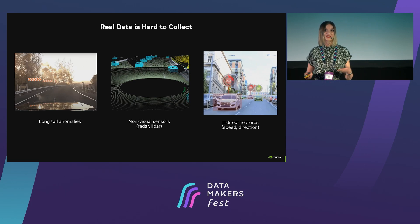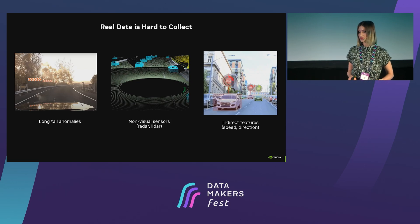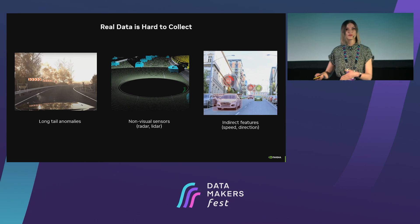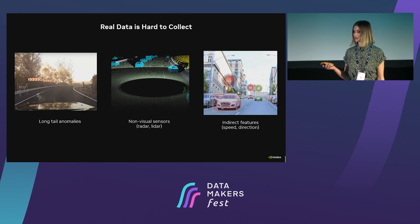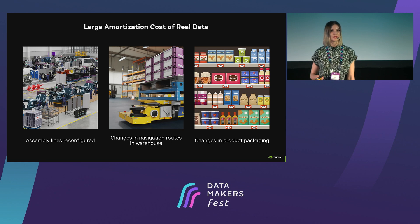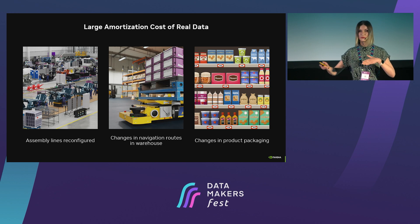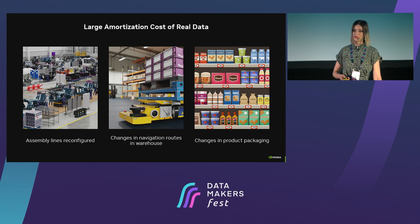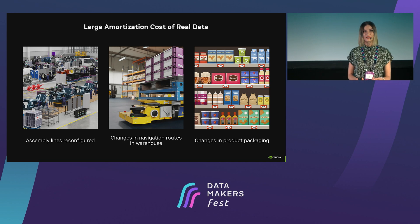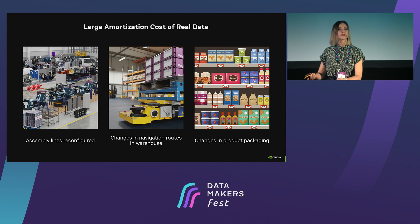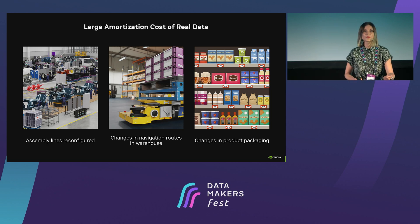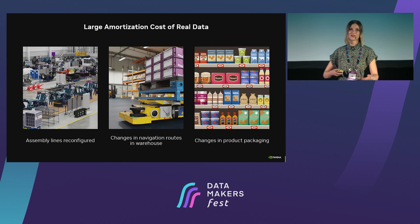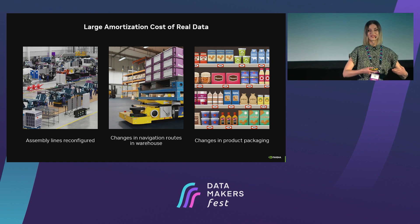Also, talking about data which is hard to label — I've mentioned lidar scans. There are non-visual sensors like radars and lidars, and this data is really hard to label. There are also indirect features like speed or direction, which are not obvious for a human observer and human labeler. Real data also has large amortization costs. When designing a robot acting in a factory setting, we need to deal with assembly lines being reconfigured quite frequently, or navigation routes in warehouses changing. For retail perception applications like a robot picker, packages change frequently — think of football games or Christmas campaigns. Retraining your models and recollecting the data can be quite painful.